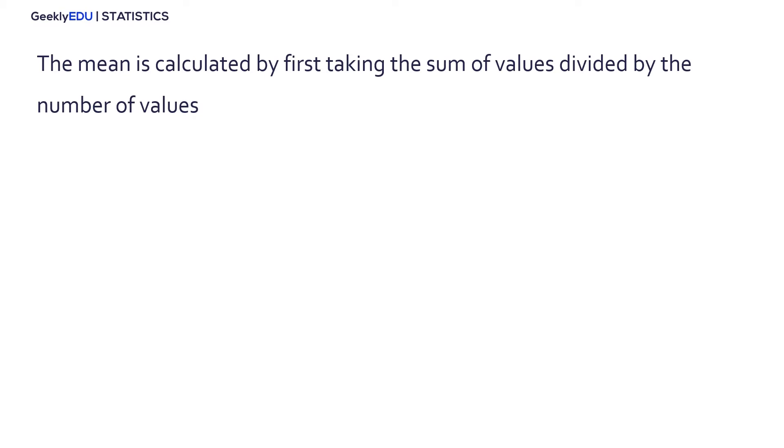So first, we have to know that the mean is calculated by first taking the sum of values divided by the number of values. So for a sample of size n, we have this formula. x-bar, which is the symbol for the mean of the average, equals the summation from i equals 1 to n, x sub i divided by n.